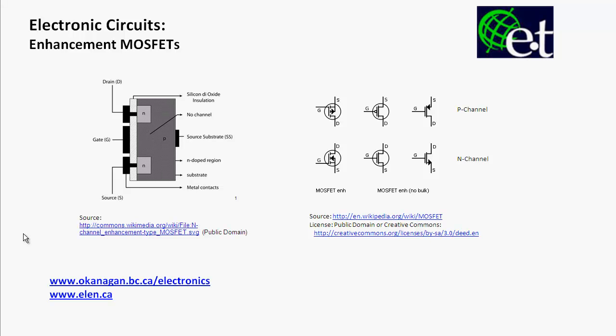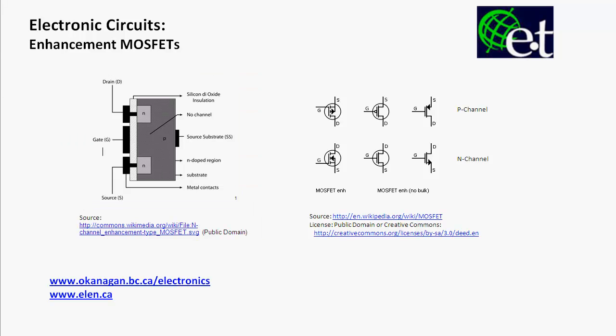Enhancement MOSFETs are one of two broad categories of MOSFETs. They're called enhancement MOSFETs because you have to enhance them — you have to do something to them in order to create the channel between the drain and the source. What we're looking at here is a picture of an N-channel enhancement MOSFET, and you'll notice that between the drain and the source there is P-type, P-doped material, where the drain and the source are N-doped material.